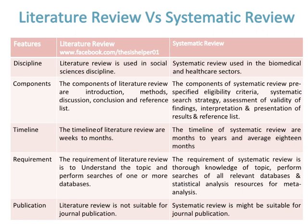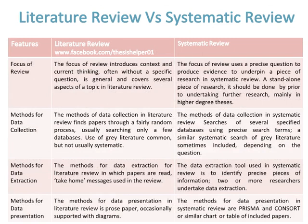A Literature Review is not suitable for journal publication, while a Systematic Review might be suitable for journal publication. The focus of a Literature Review introduces context and current thinking, often without a specific question, and is general, covering several aspects of a topic. The focus of a Systematic Review uses a precise question to produce evidence to underpin a piece of research — a stand-alone piece of research that should be done prior to undertaking further research, mainly in higher-degree theses.